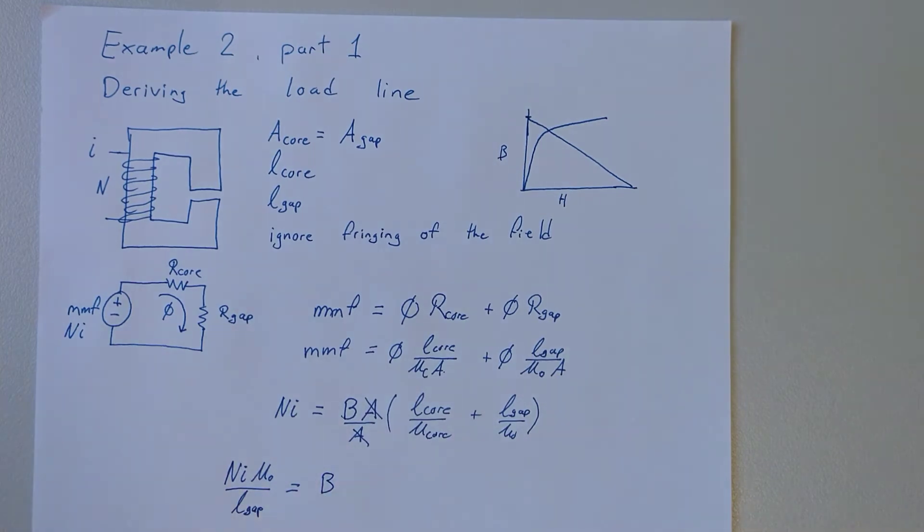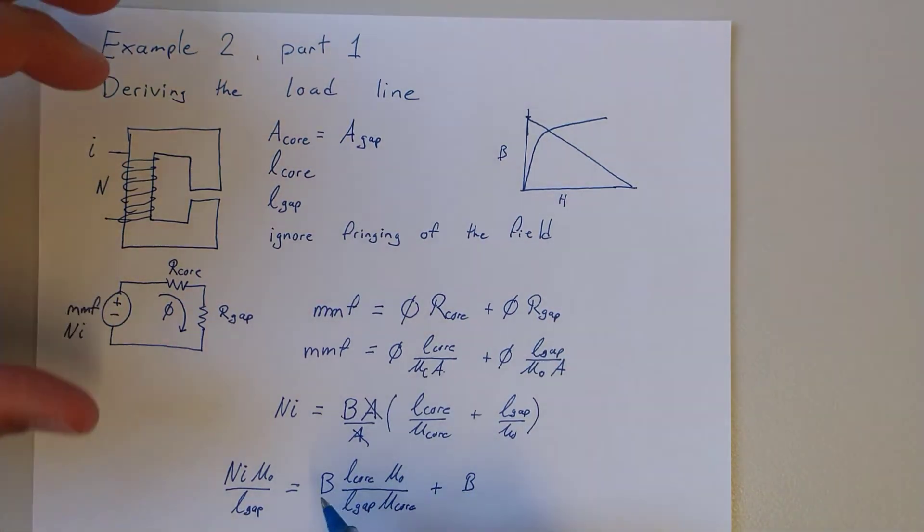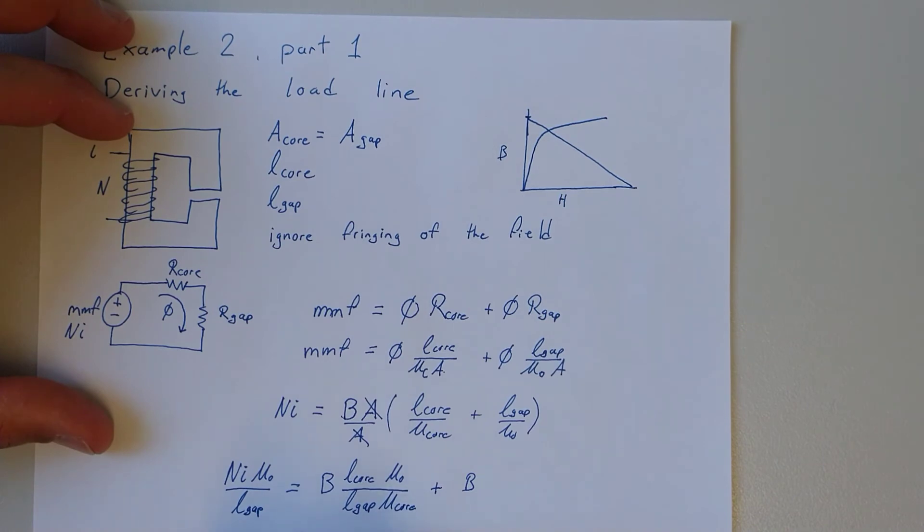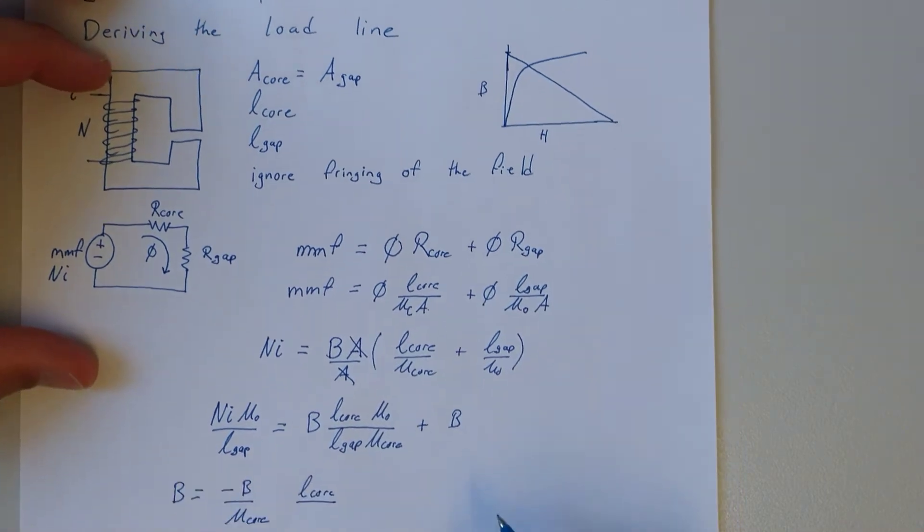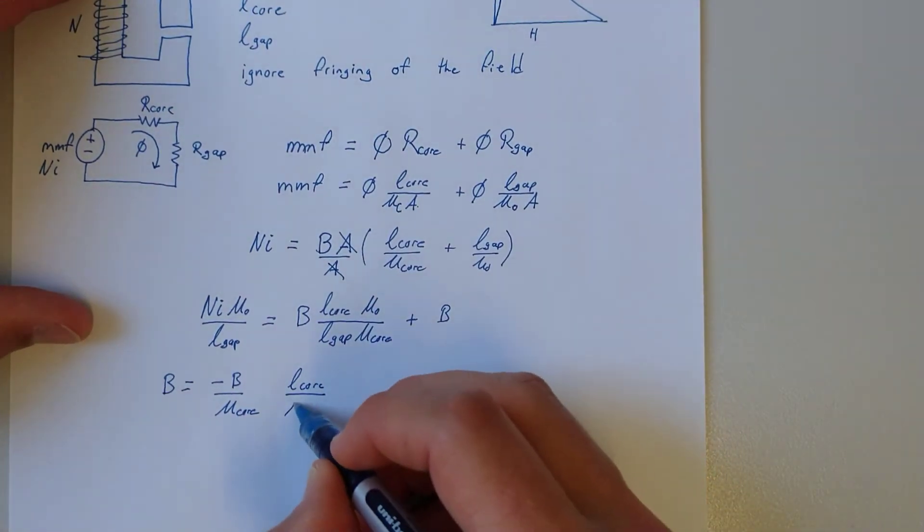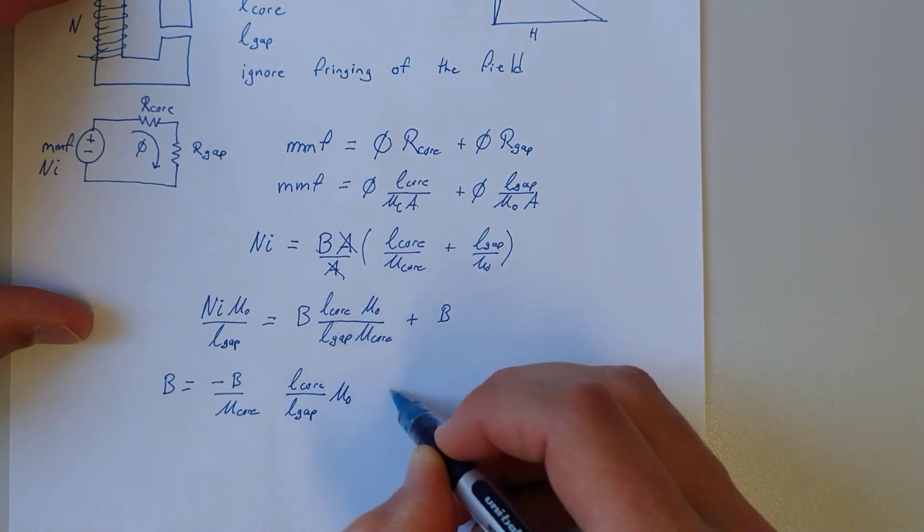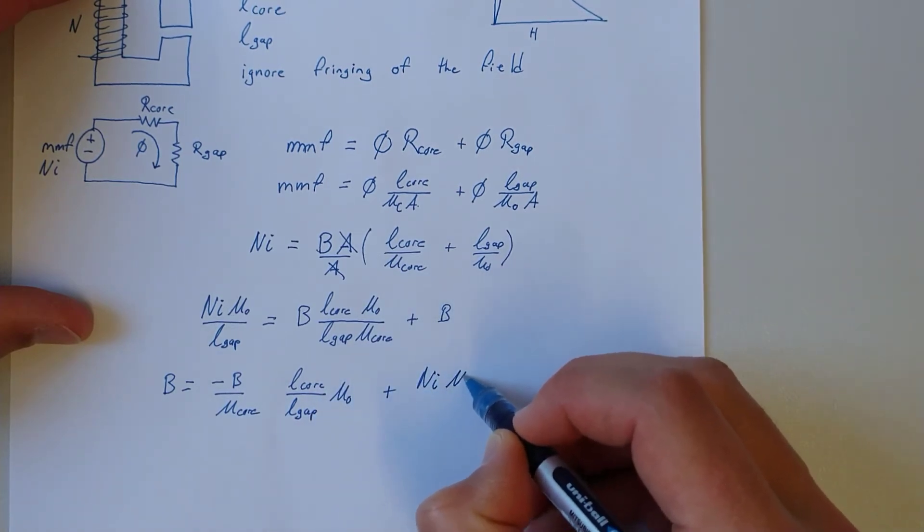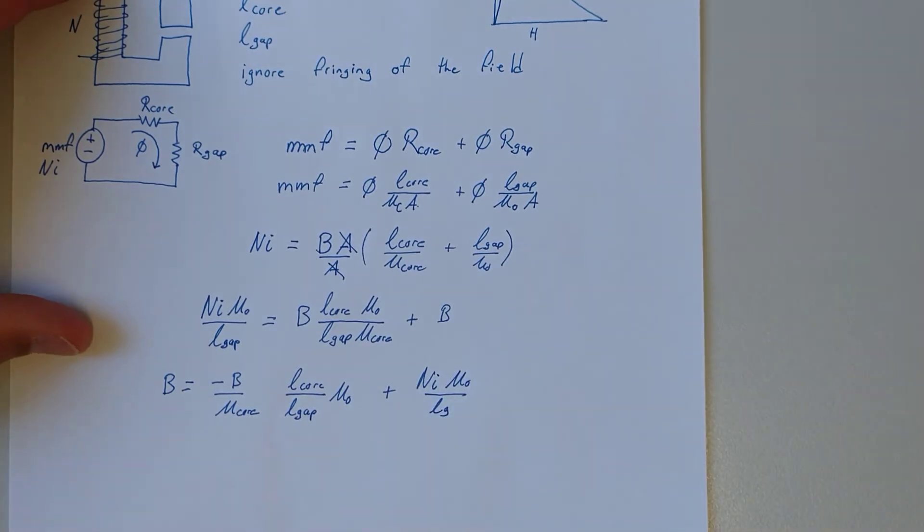Equals B length of the core mu naught over length of the gap mu core plus B mu naught over Lg. And we're almost there.